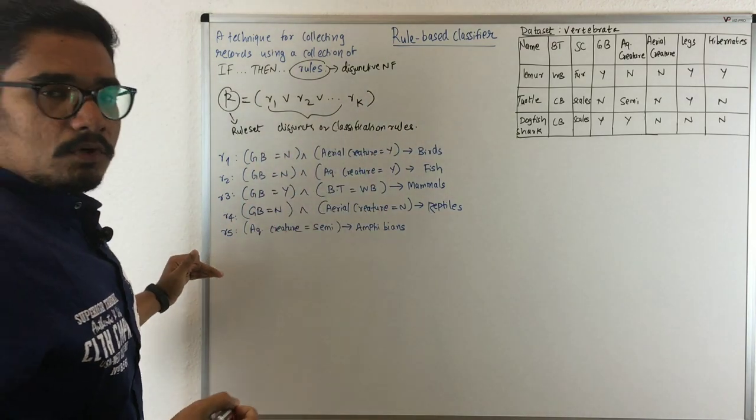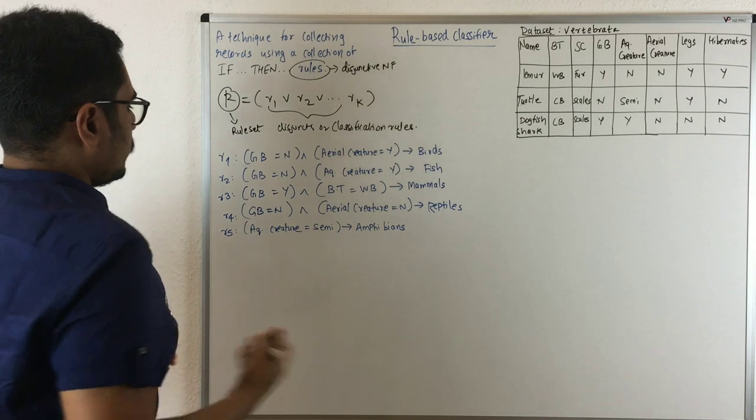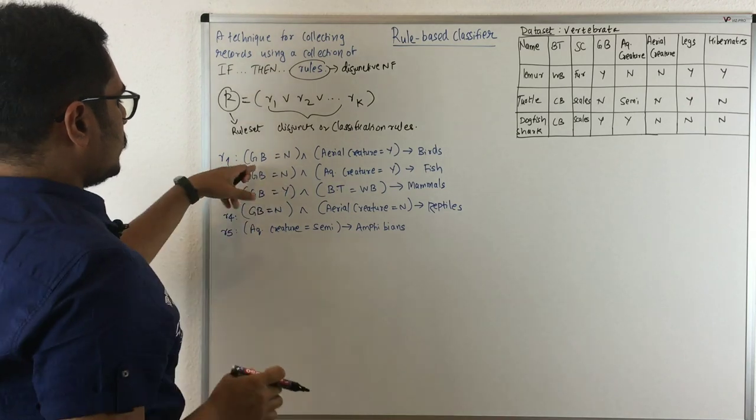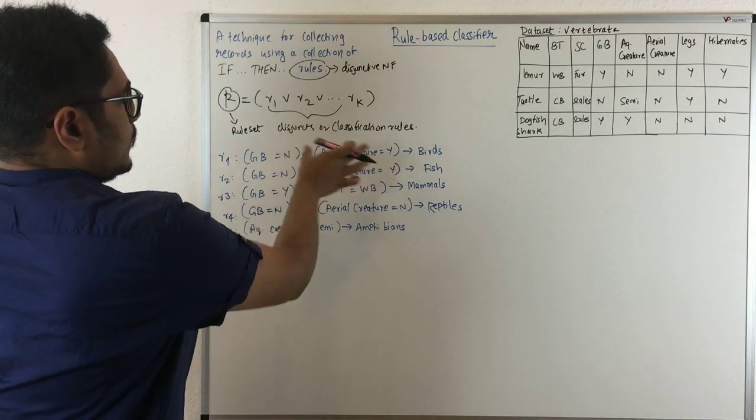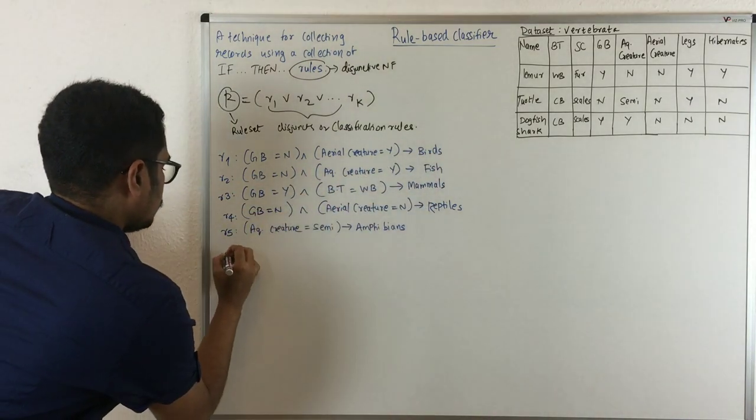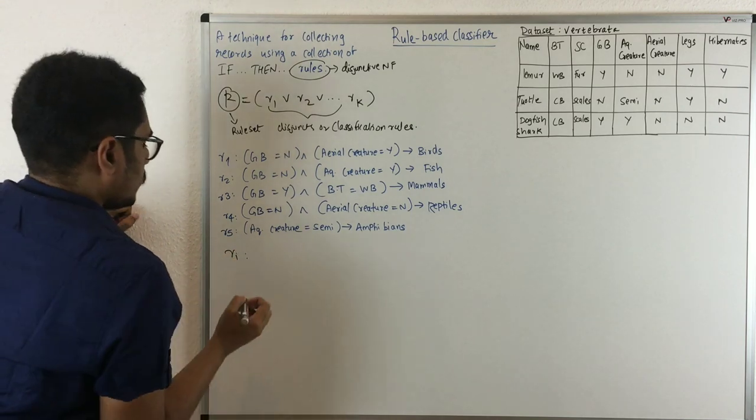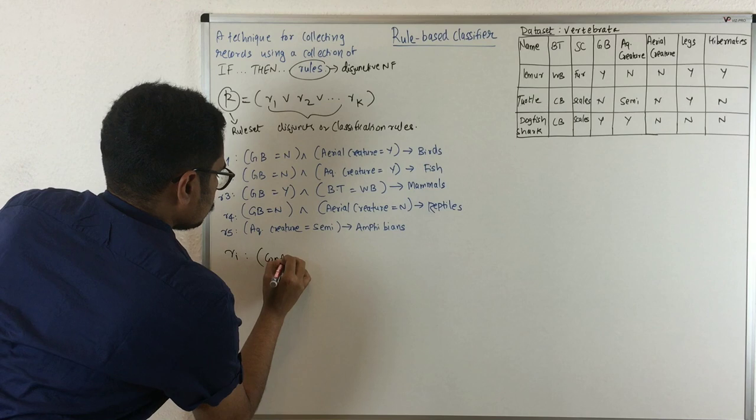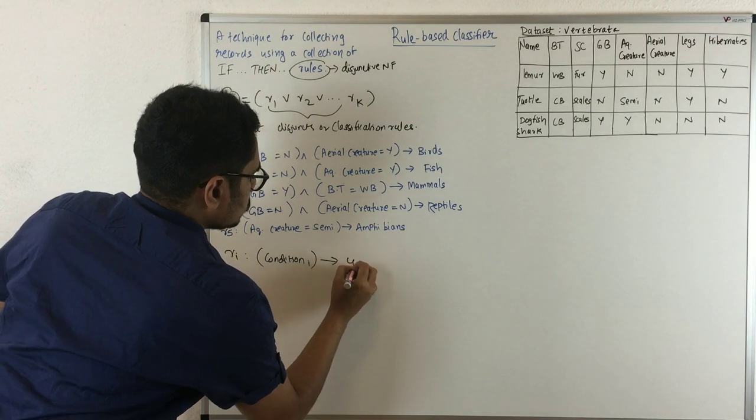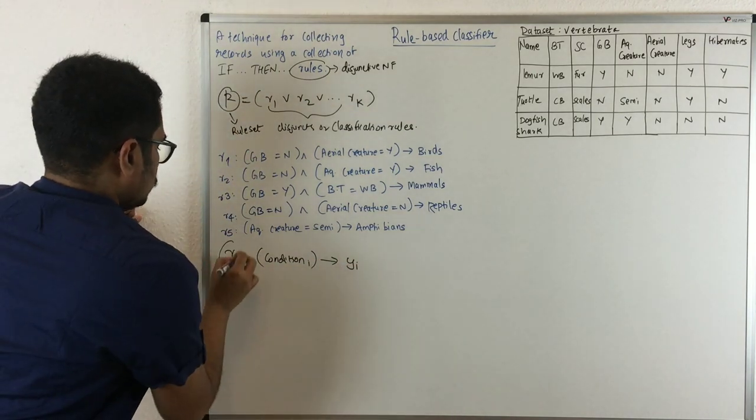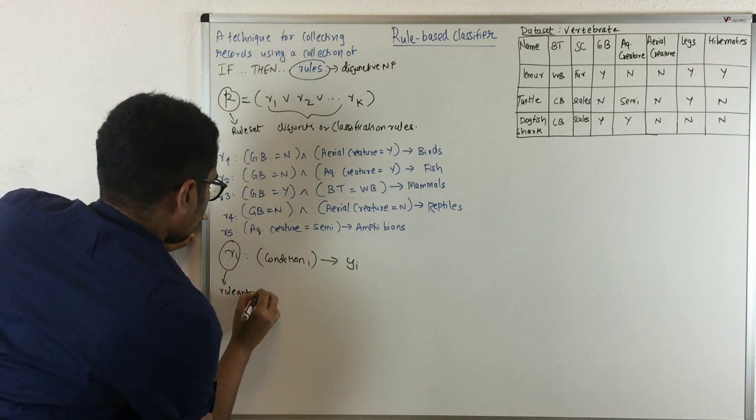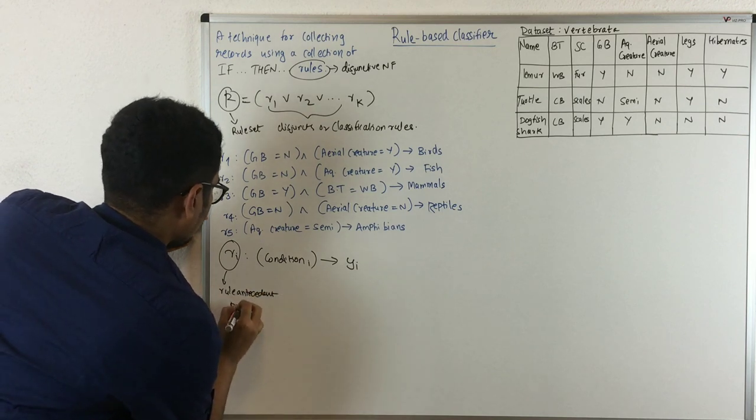These are certain examples of some rules in the rule-based classifier. Rule one takes the form in parentheses with attribute-value pairs, similarly connected with another rule, and this derives a particular rule. This takes the form R_i: condition_i, there can be a number of conditions which derive some rule Y. The left-hand side is called rule antecedent or precondition.